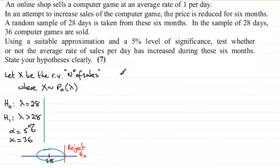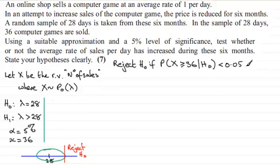In this video, I'm just going to look at the method where we reject the null hypothesis if the probability of X being greater than or equal to 36, given that the null hypothesis is true, turns out to be less than 0.05. In the accompanying video with this, we'll do the method where we look at the critical value.